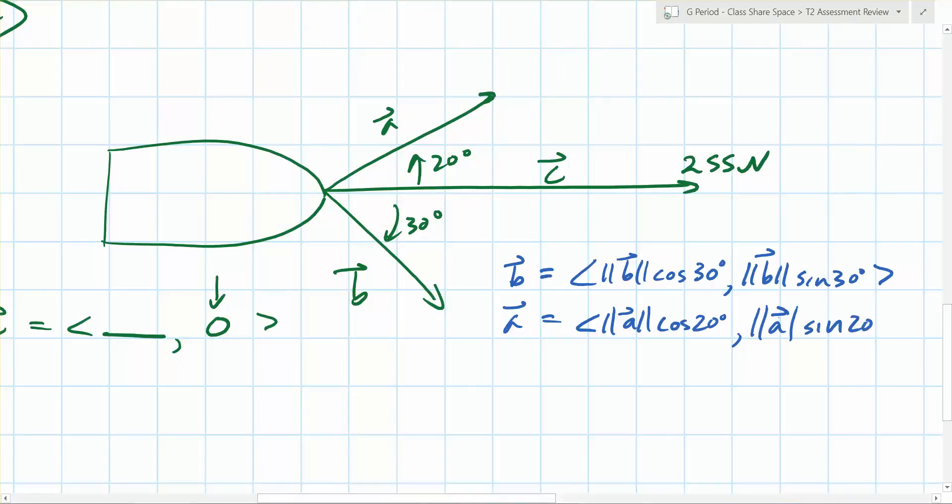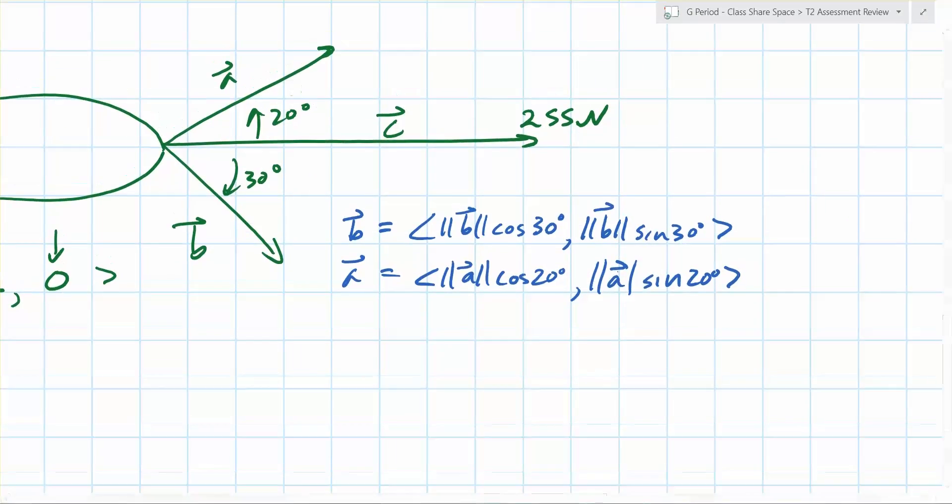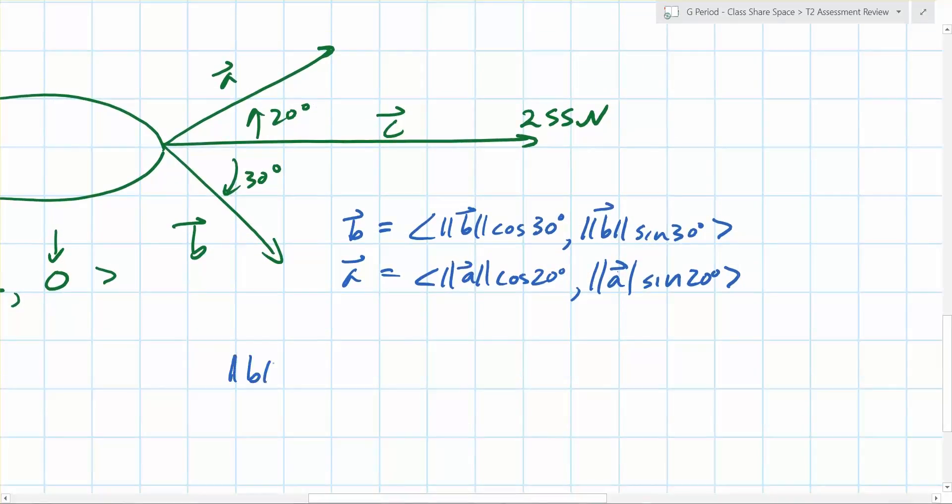Sine of 20 degrees. So what do you know? What are the two equations we could set up here? We know that magnitude of B sine 30 degrees has to equal magnitude of A sine 20 degrees. That's our first equation. What's the second equation we need? Magnitude of B cosine 30 degrees plus magnitude of A cosine 20 degrees has to equal 255. Exactly.